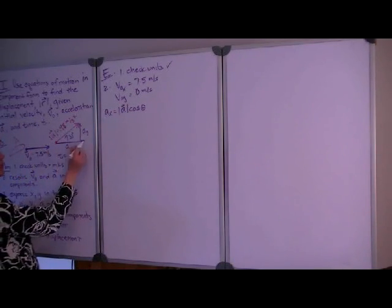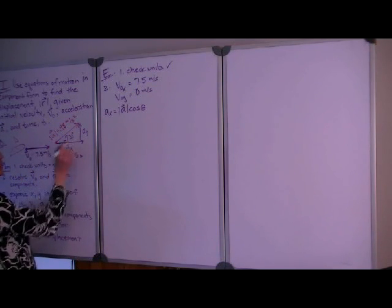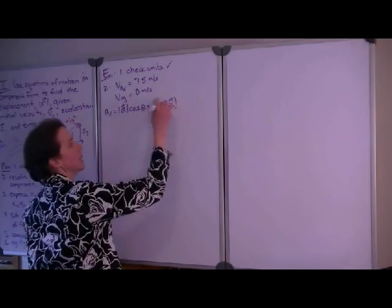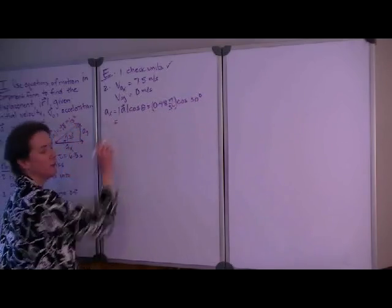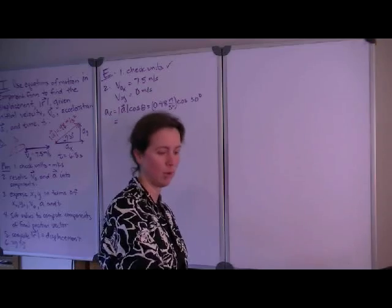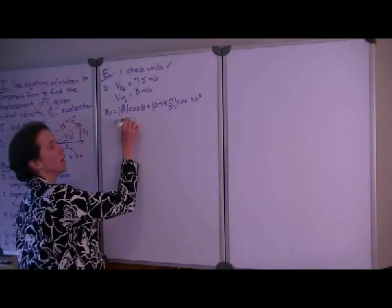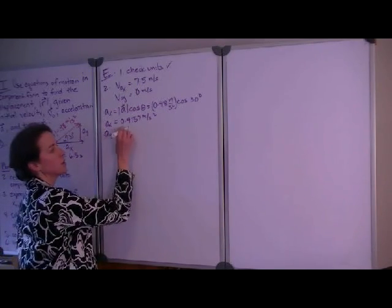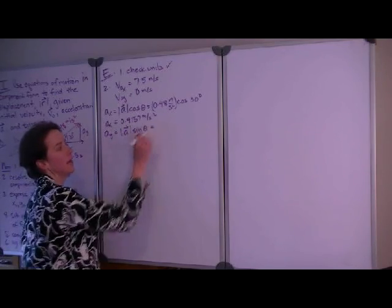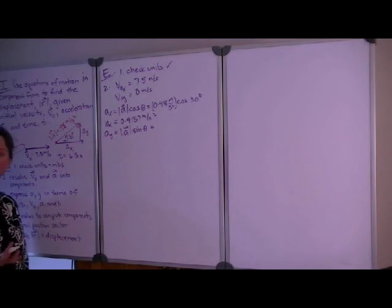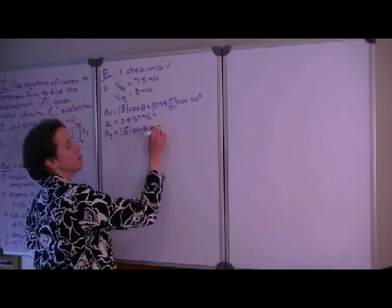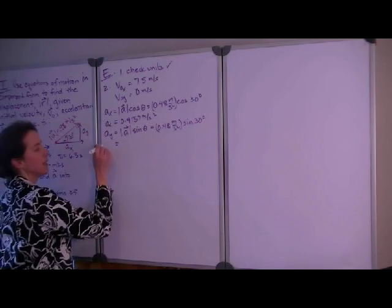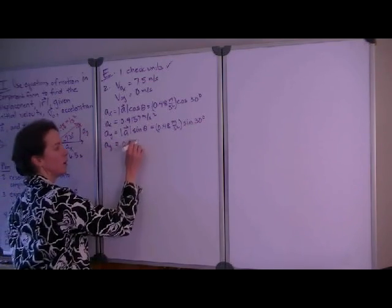Why the cosine? If we go back to our sketch, we see that the x component of the acceleration vector is the side adjacent to the angle of 30 degrees. So that is equal to 0.48 meters per second squared times the cosine of 30 degrees — making sure your calculator is in degree mode rather than radian mode — giving us 0.4157 meters per second squared. For the y component of acceleration, we use the magnitude times the sine of the angle, because the y component is opposite to the angle. So that is 0.48 meters per second squared times the sine of 30 degrees, which is one-half, giving us a y component of 0.24 meters per second squared.